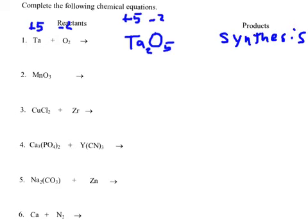This next one here — there's only one reactant and it's a compound. There's no plus; it's just one thing. When that happens, it's what we call a decomposition. The great thing about decomposition reactions is all you have to do is separate these two from each other with a plus sign, and then check for pesky sevens. So I'm going to have Mn plus O.